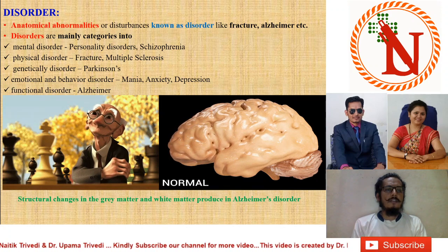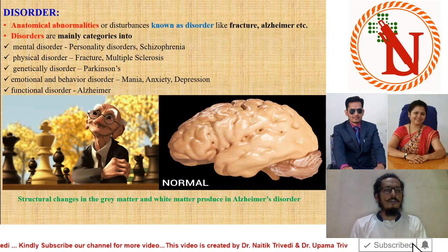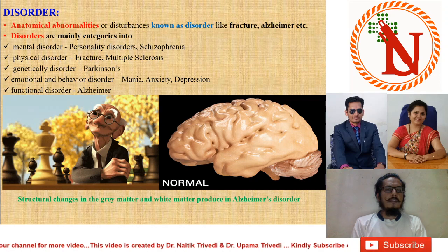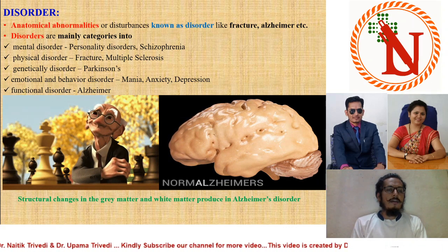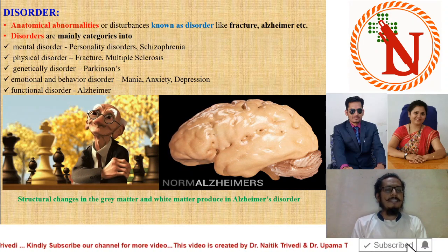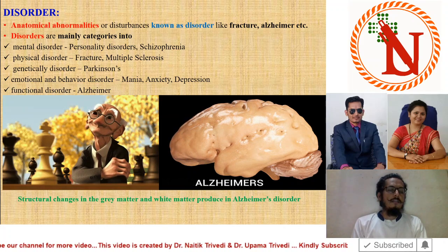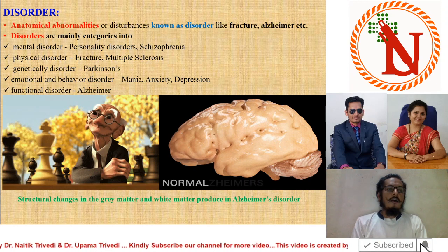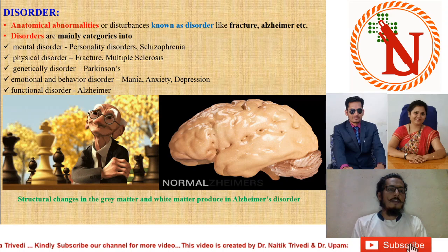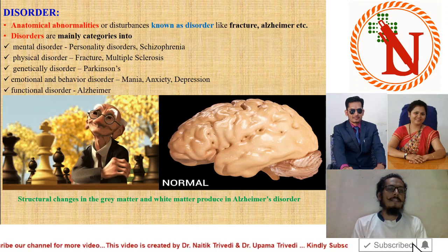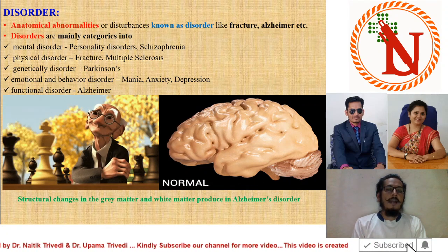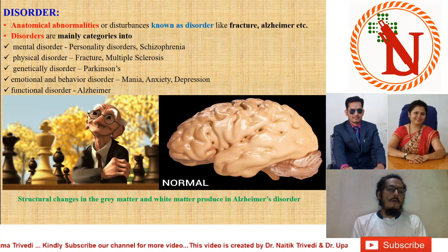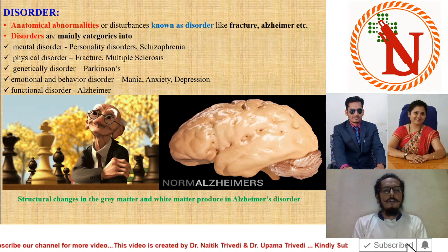I have divided disorder into several categories. First is mental disorder — examples include personality disorder and schizophrenia. Next is physical disorder — examples are fracture and multiple sclerosis. Then genetical disorder — examples are Parkinson's and other diseases. Emotional and behaviour disorder — examples are mania, anxiety, and depression. And functional disorder, for which we take the example of Alzheimer's. Disease means functional or physical abnormality, while disorder means anatomical abnormality.